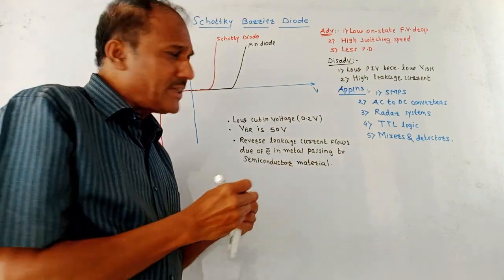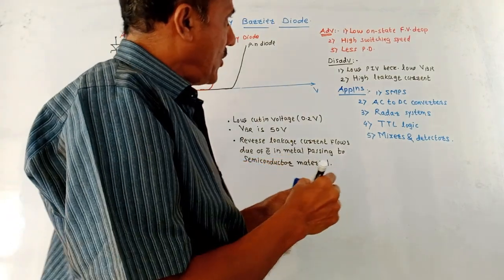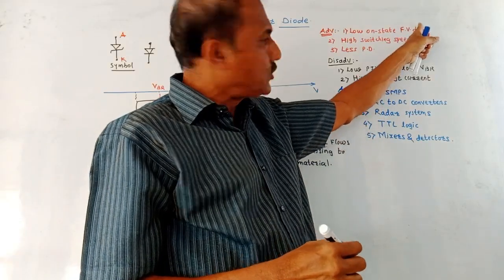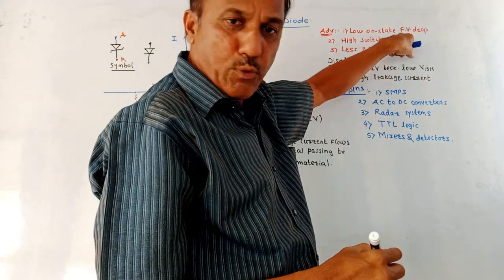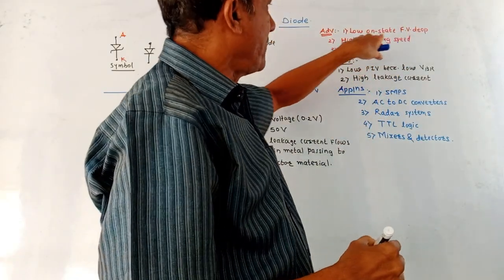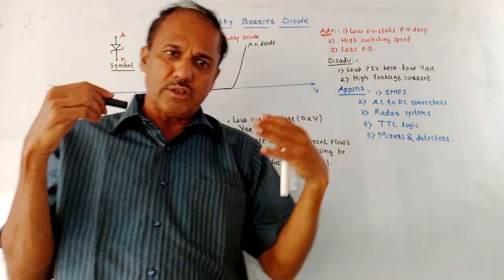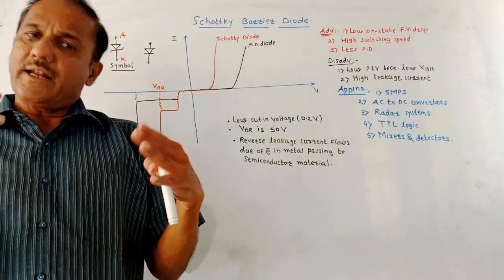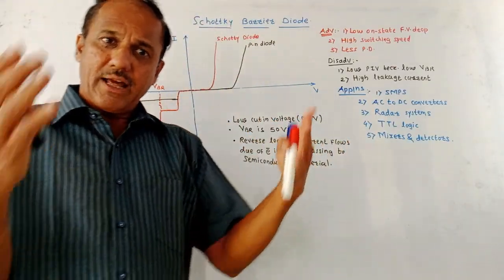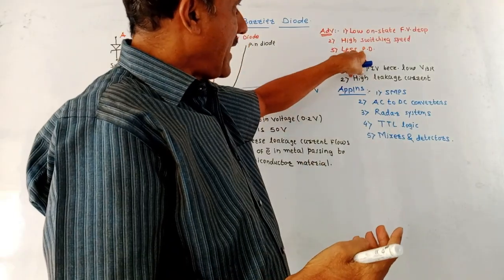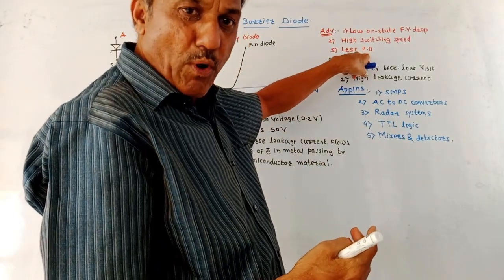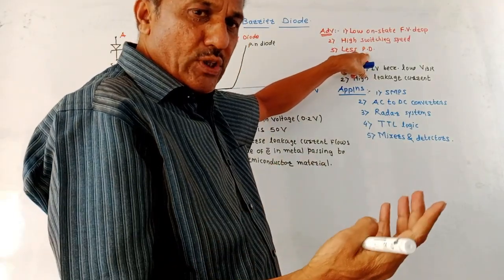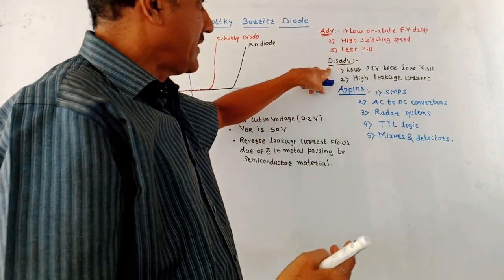Advantages of the Schottky Barrier Diode: it has a low ON-state forward voltage drop (FV means forward voltage drop). It has high switching speeds, making it applicable in the microwave range. There is less power dissipation compared to the normal PN Junction Diode.